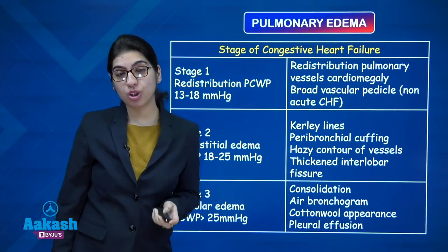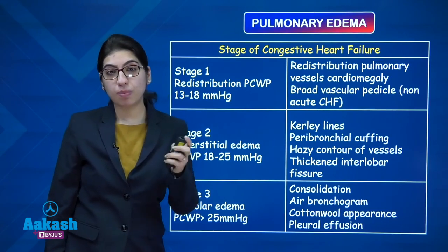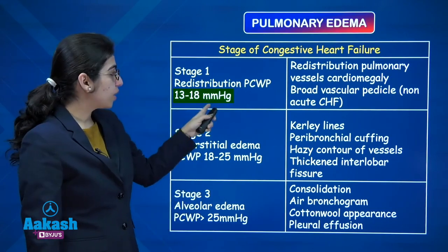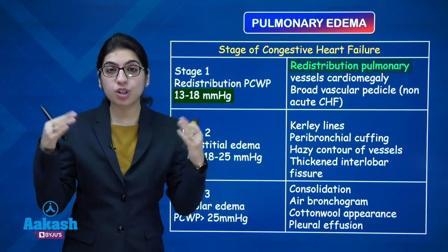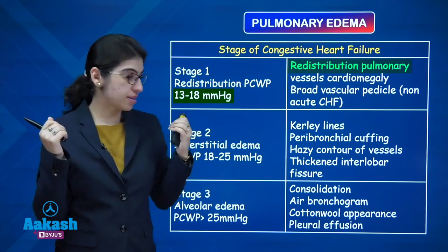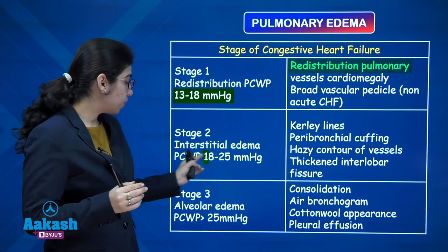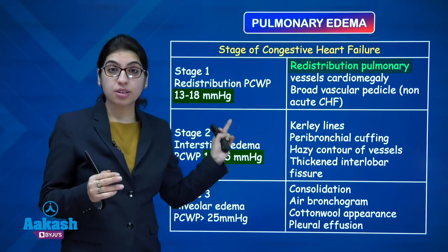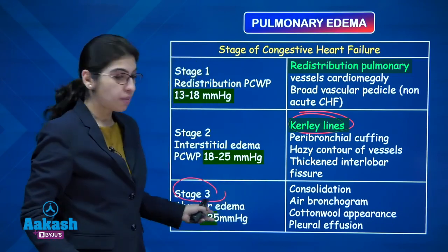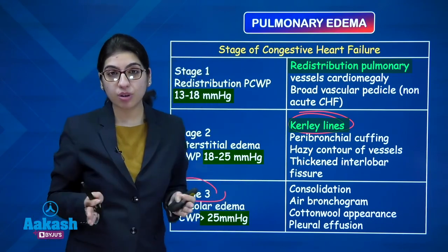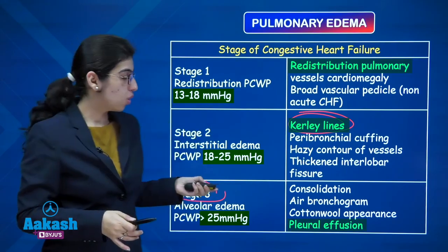In pulmonary edema, the cardiogenic cause has 3 stages. Stage 1 (PCWP 13–18): redistribution of pulmonary vessels — reverse moustache sign and stag antler sign. Stage 2 (18–25): interstitial edema with Kerley B curly lines. Stage 3 (above 25): alveolar edema with typical batwing appearance and possible pleural effusion.